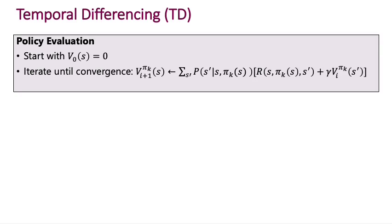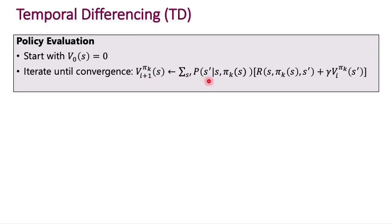One really key concept in many reinforcement learning algorithms is this idea of temporal differencing. To introduce that idea, let's look at the policy evaluation algorithm from the fully known MDP case. To evaluate any policy — meaning to assign values to each state — we start by setting all values to zero and then iterate this update until convergence. This is basically just the Bellman equation written down as an update rule.